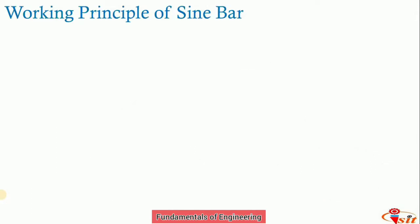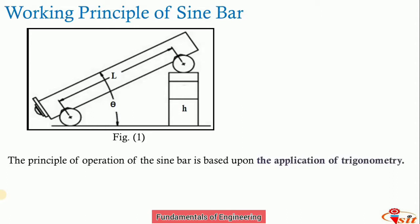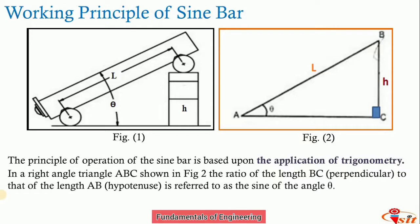The principle of operation of the sine bar is based on the application of trigonometry. One roller is kept at the height of the slip gauges and the other roller is kept on the surface plate. From the right-angle triangle ABC, the ratio of perpendicular BC to hypotenuse AB gives sin(θ). Therefore, θ = sin⁻¹(H/L), where H is the height of the slip gauges and L is the center distance between the two rollers.